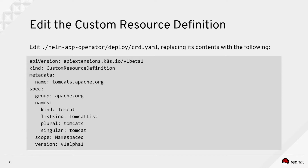We'll start with helm-app-operator/deploy/crd.yaml, replacing its contents. We set the API version to apiextensions, which is standard for CRDs. The resource is named tomcats.apache.org, with group apache.org and kind Tomcat — matching what we specified when building the container. We also define the list kind, plural and singular names for use with oc or kubectl, and declare the API version as v1alpha1.